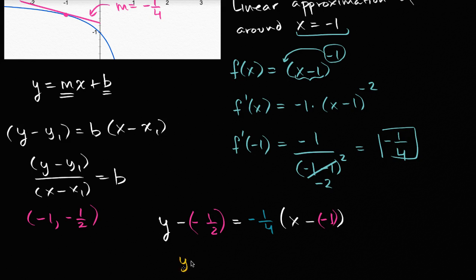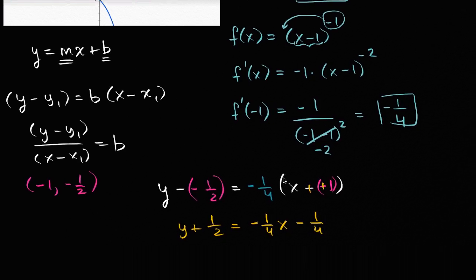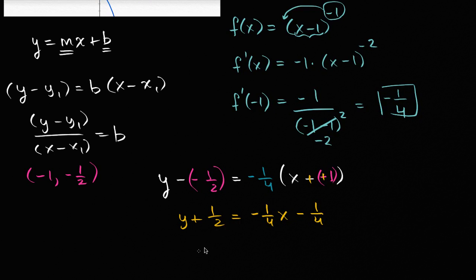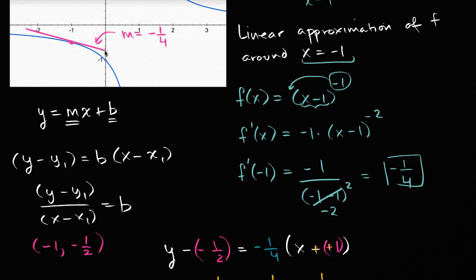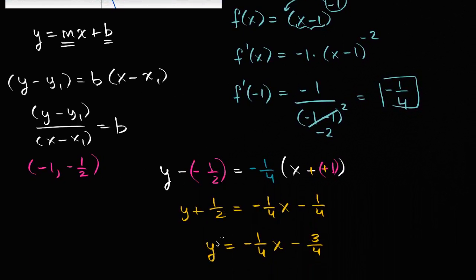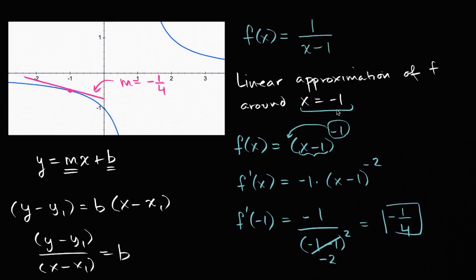Simplifying: y plus one half equals negative one fourth times (x plus one). Distributing gives y plus one half equals negative one fourth x minus one fourth. Subtracting one half from both sides: y equals negative one fourth x minus three fourths. That's actually close to what I drew — the line intersects the y-axis at negative three fourths. This line is a very good linear approximation for that non-linear function around x equals negative one.